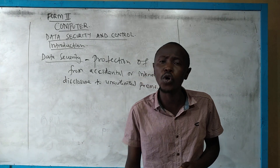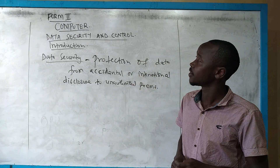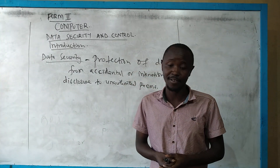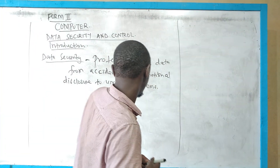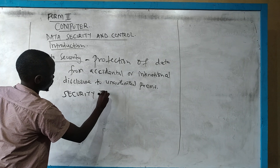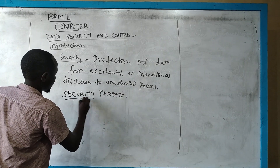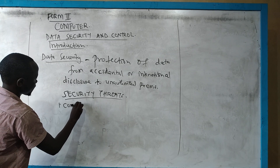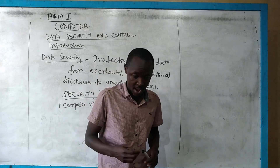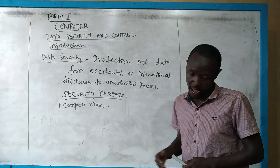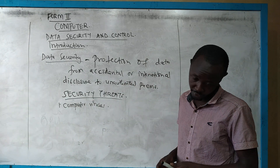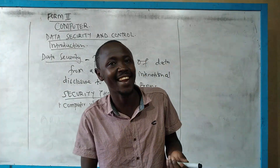Now we want to see which are these threats — what in security are we securing from. So security threats to data: the first one is computer viruses. This is not the first time you are hearing of a virus in a computer. We are going to see what is this virus, what causes the virus, and the ways of protecting the computer from viruses. A computer virus is a destructive program — actually it is a software. Most of them are developed by software people deliberately.